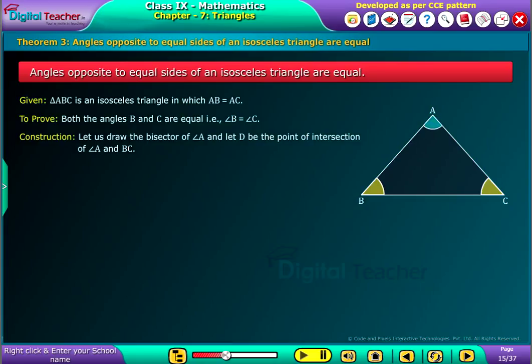Construction: Let us draw the bisector of angle A and let D be the point of intersection of angle A and BC.